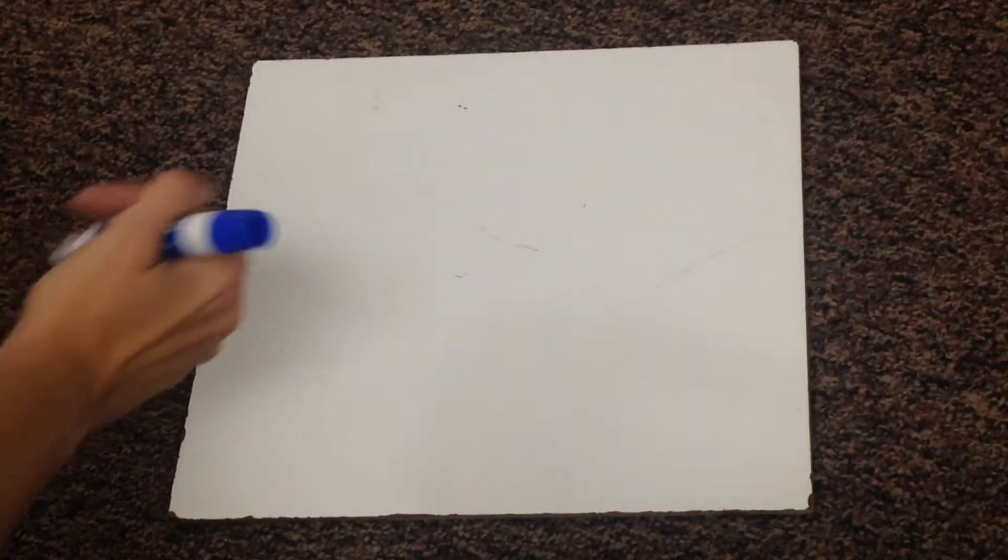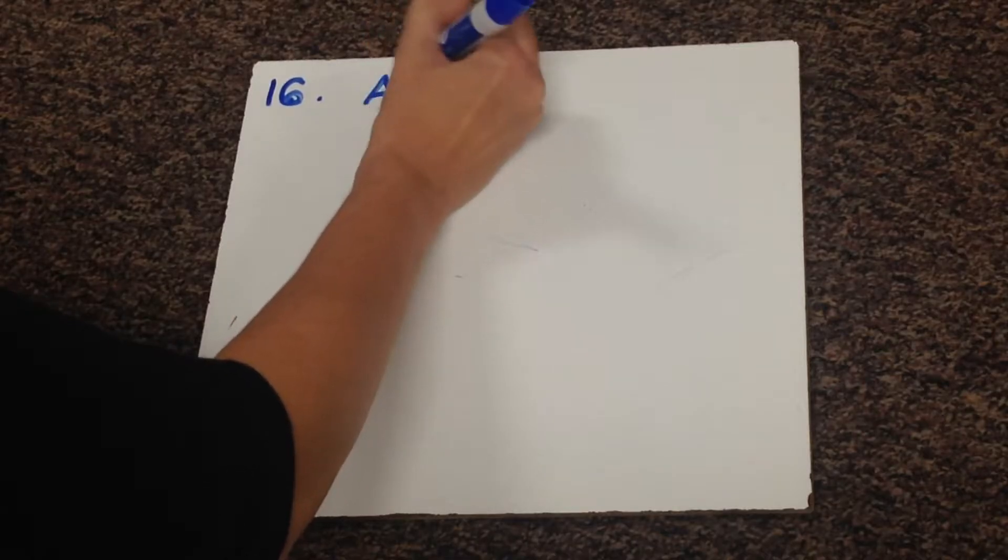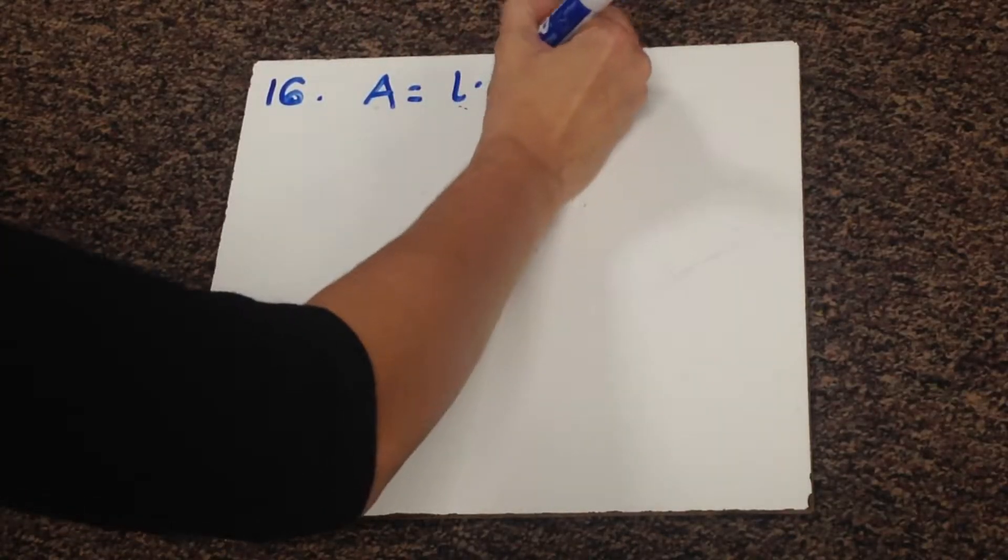The last problem we're going to do is the story problem, number 16. It's just like the story problem we did in your notes. We're looking for area. You should remember that area equals length times width.